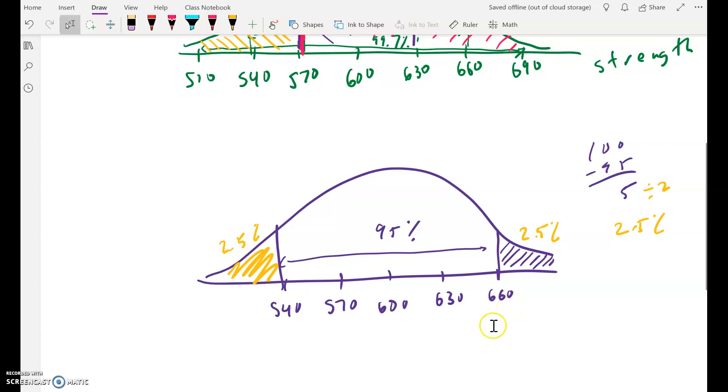And then I figured out that's 2.5% of the rivets that are stronger than 660. 2.5% of the rivets are weaker than 540. And I got that from taking 100, subtracting 95, because that's within two standard deviations. That leaves me with 5% on the edges, divide by two, and that's 2.5%.